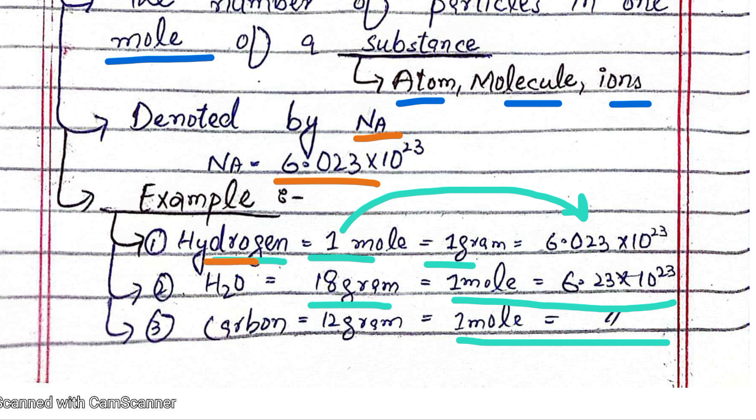Whether hydrogen at 1 gram, water at 18 grams, or carbon at 12 grams - one mole of any substance contains the same number of particles. This is the Avogadro number.